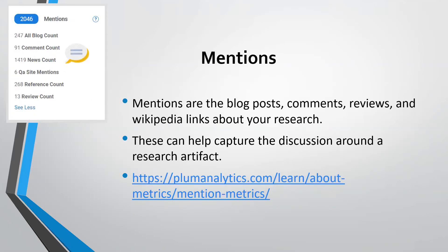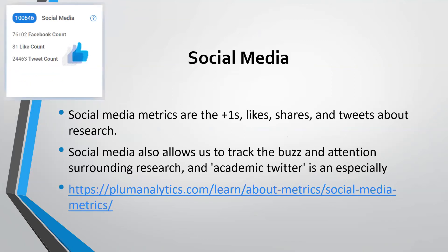Mentions are meant to capture conversations around works online, via blogs, comments, video streaming sites, and references in Wikipedia. And lastly, we have social media, which includes Twitter and Facebook tweets and shares, but it also includes Reddit upvotes minus downvotes, sharing ratings on Amazon, and likes on YouTube. For academic journal articles in particular, Twitter is pretty popular to share new research, and researchers usually will link to the paper either with a URL to the publisher's site or the DOI — the digital object identifier — so that it's picked up in the metrics counts.